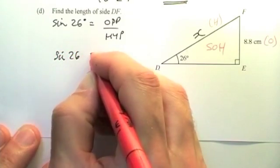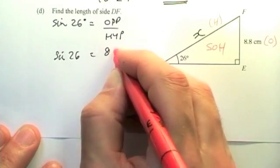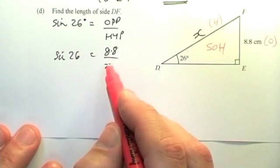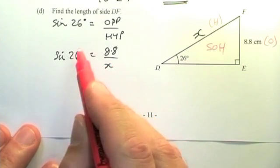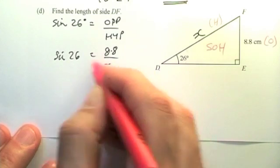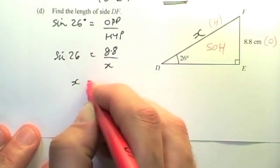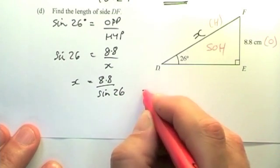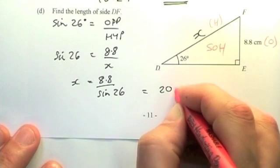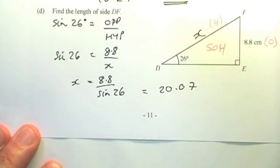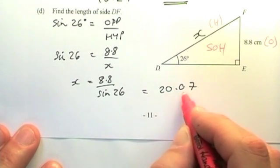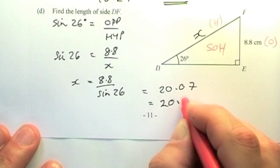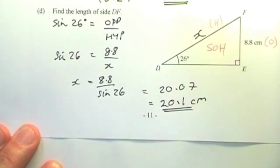So that means sine 26 equals opposite is 8.8, and that's divided by X. We've got another situation now where X is at the bottom of the fraction on this right-hand side, so I've got to multiply up and divide down across the equal sign. So those two swap and it becomes X equals 8.8 over sine 26. That, if we press on the calculator, gives us 20.07 are the first four digits displayed, and that's going to go to three figures, but I've got to go up because the fourth one is five or more. So that equals 20.1 centimeters to three significant figures.